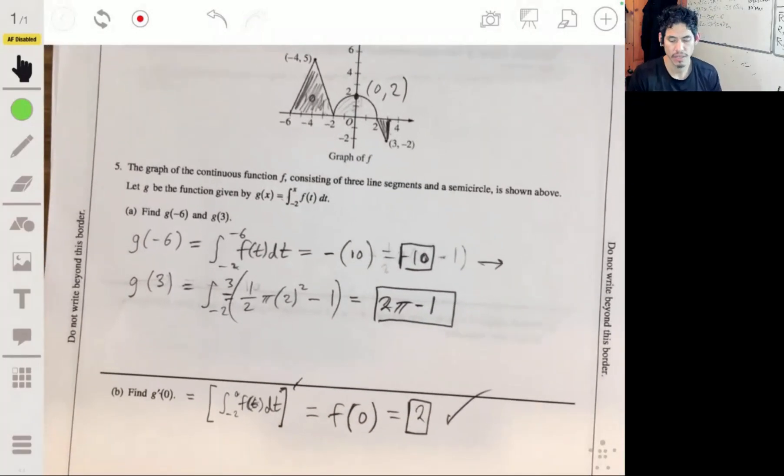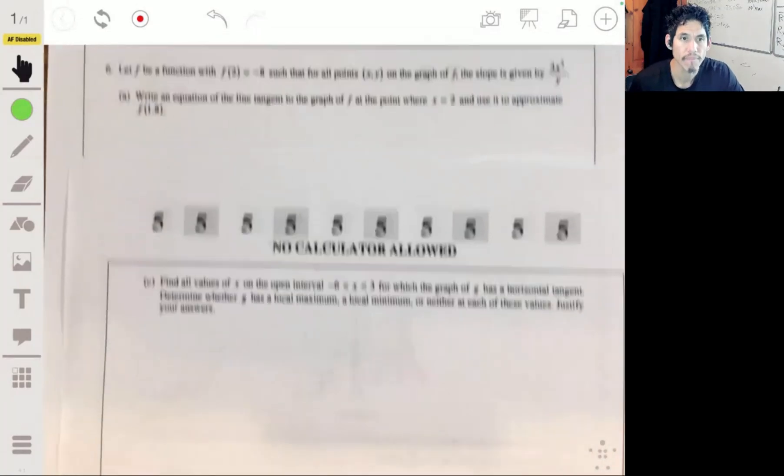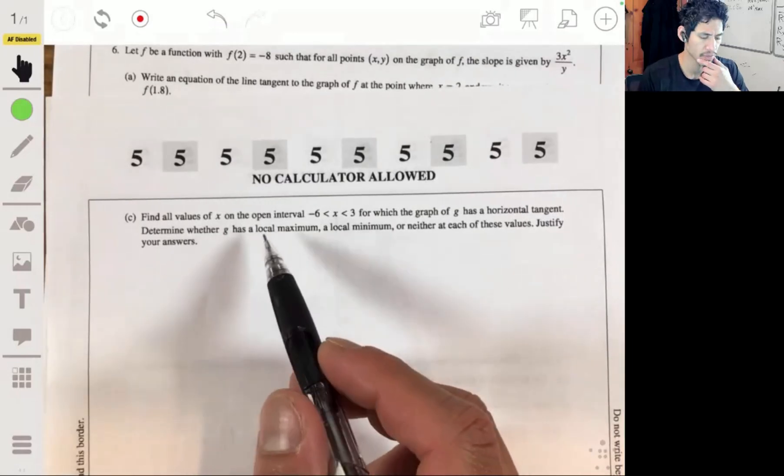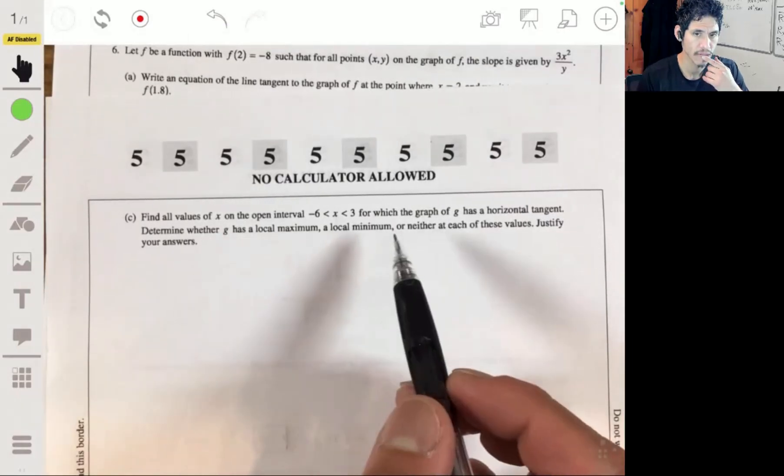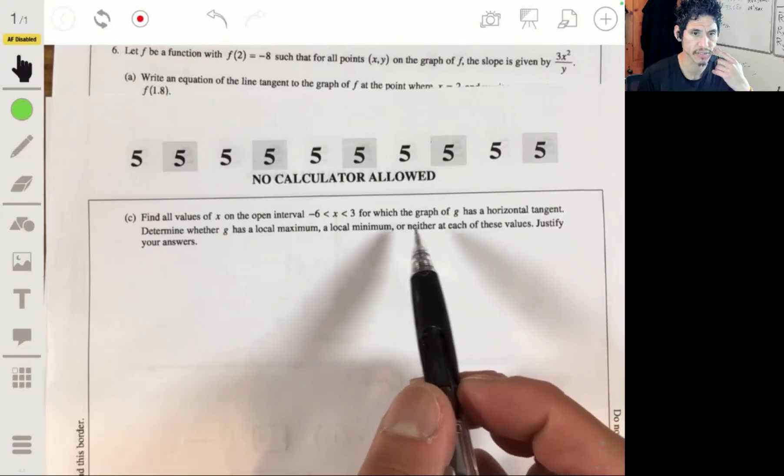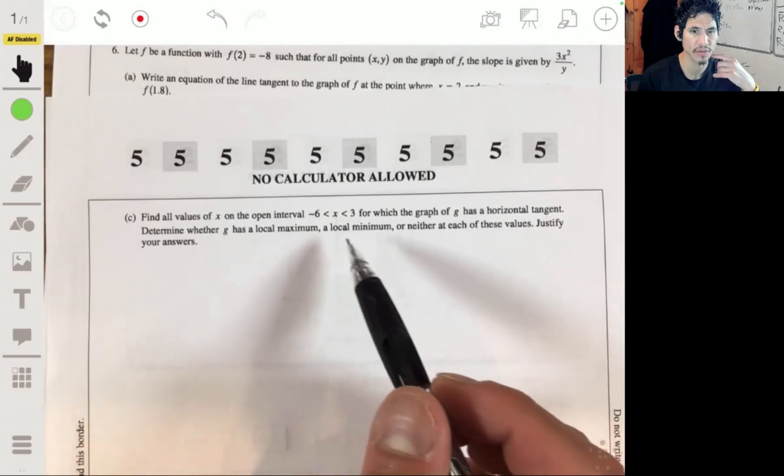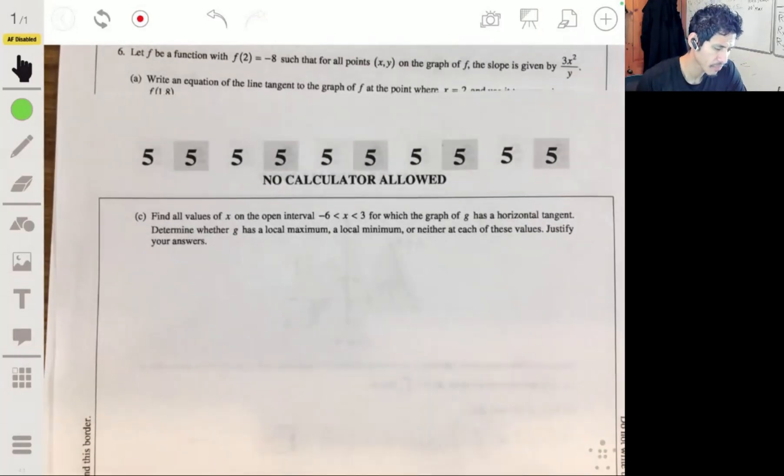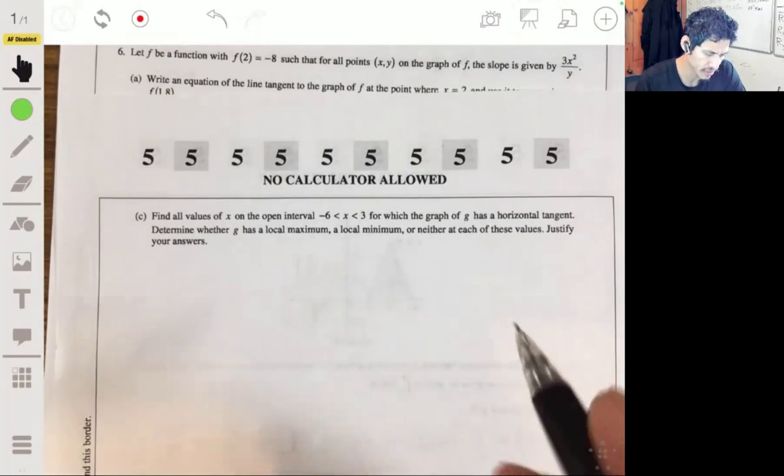Since we have the graph of f here, we just look at where f of 0 is, and that's going to be 0, 2. So f of 0 is 2, and g prime of 0 is 2. Nice, moving right along. Find all the values of x on the open interval for which the graph of g has a horizontal tangent.